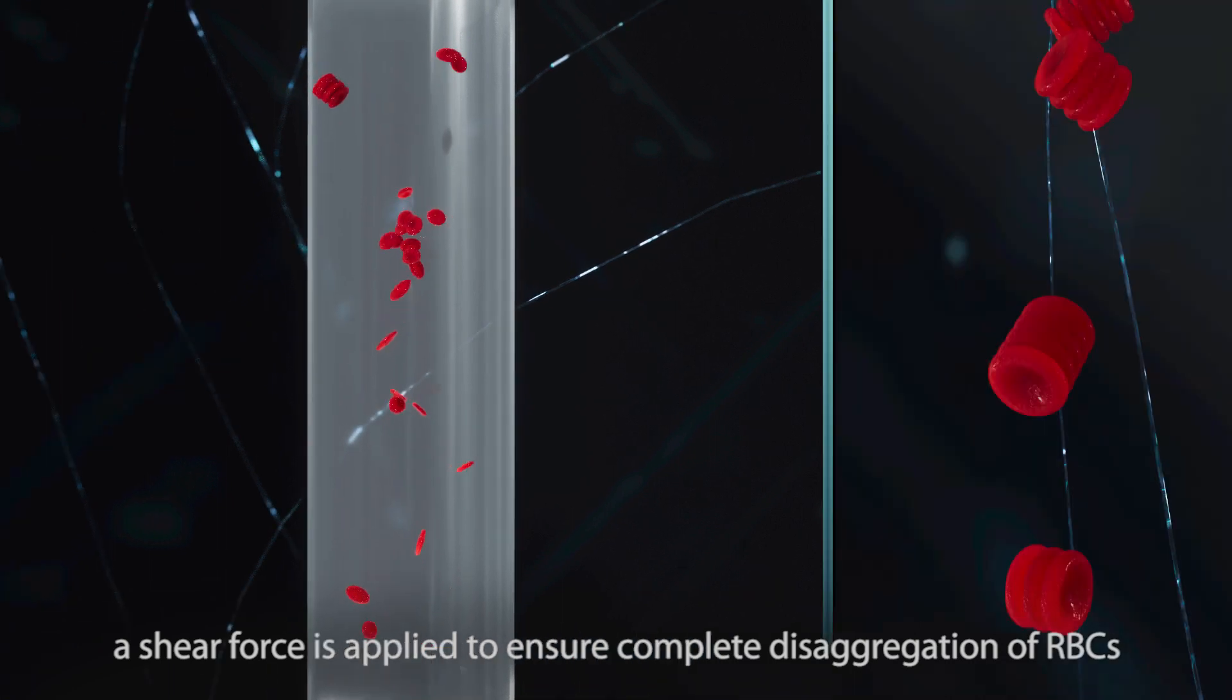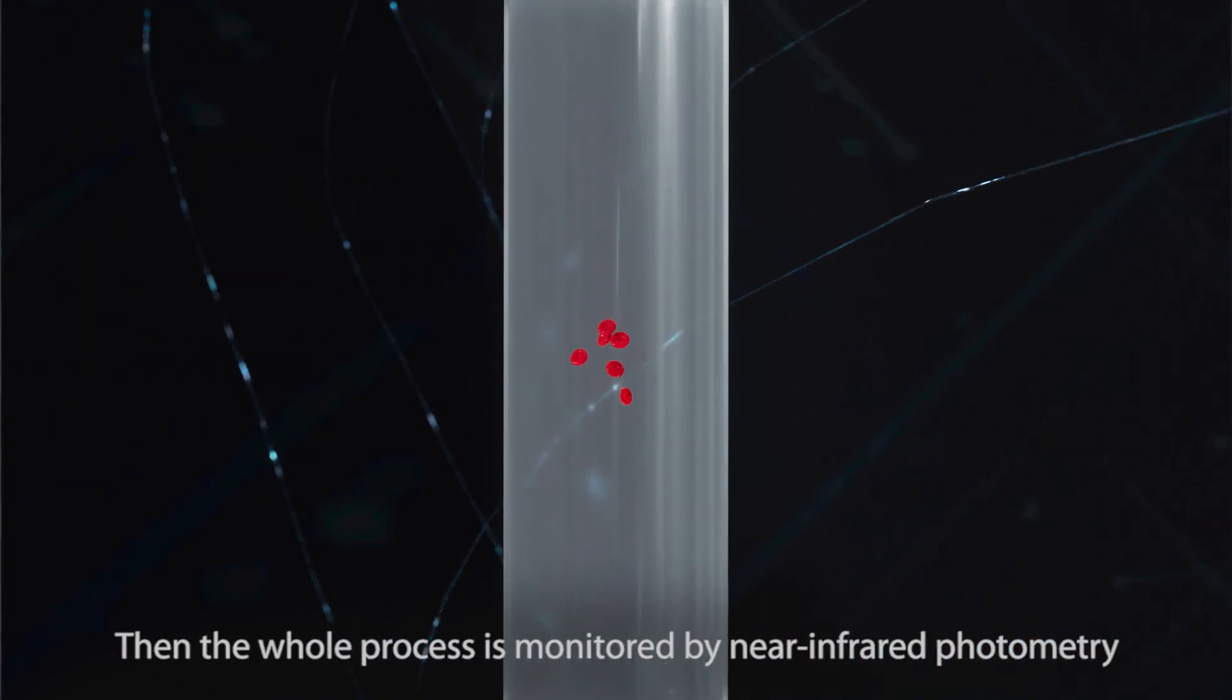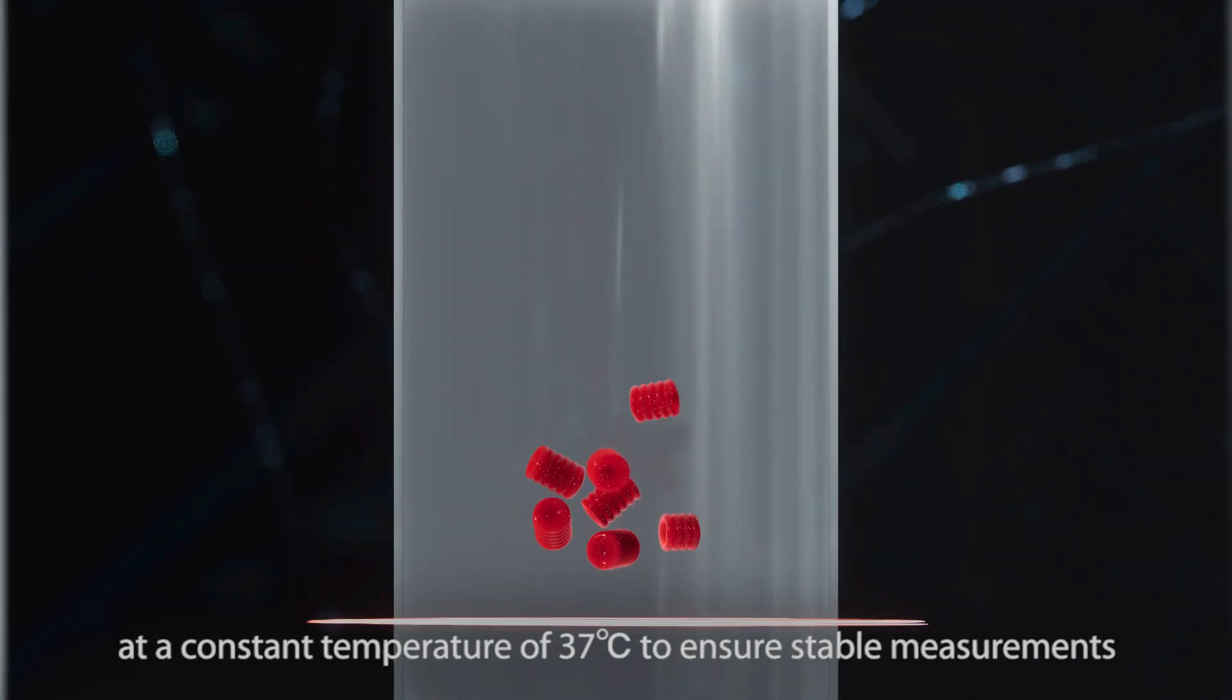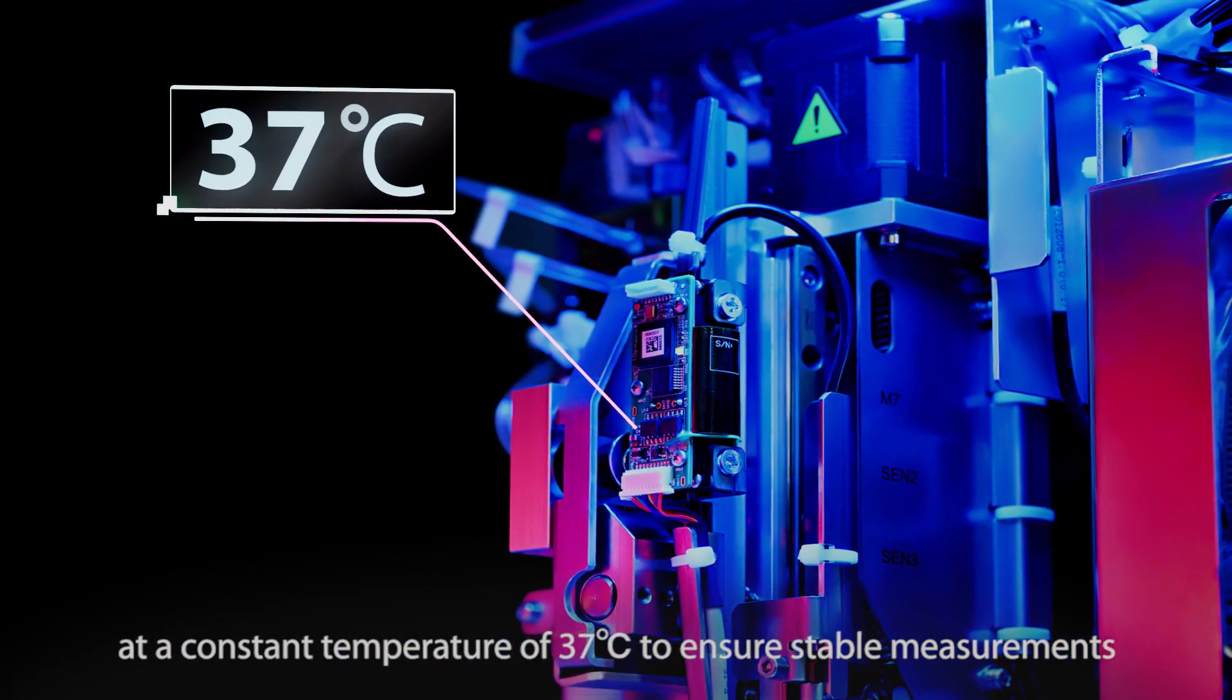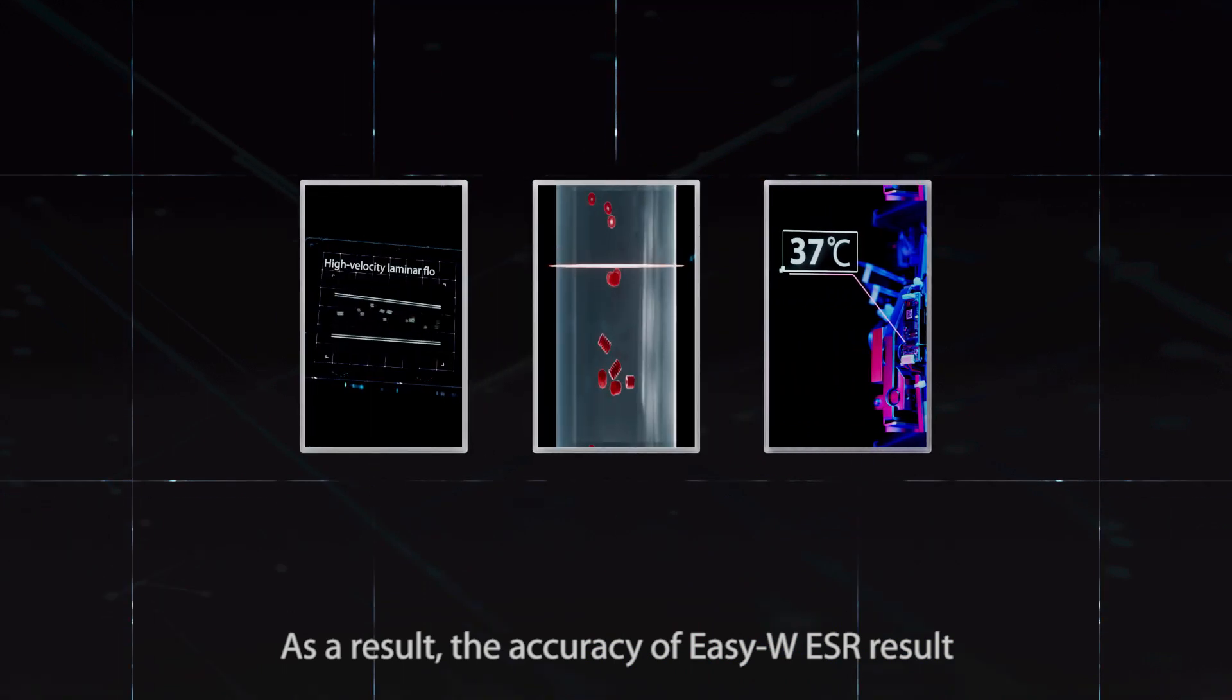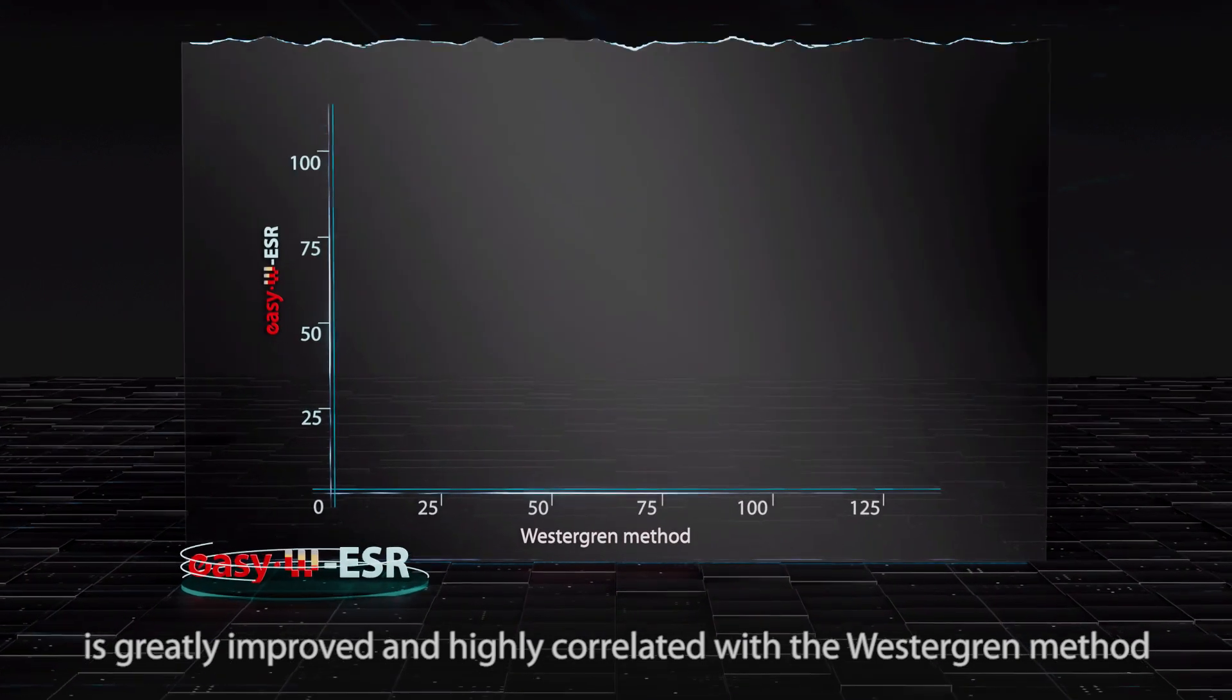a shear force is applied to ensure complete disaggregation of RBCs. Then the whole process is monitored by near-infrared photometry at a constant temperature of 37 degrees Celsius to ensure stable measurements. As a result, the accuracy of EZW ESR results is greatly improved and highly correlated with the Westergren method.